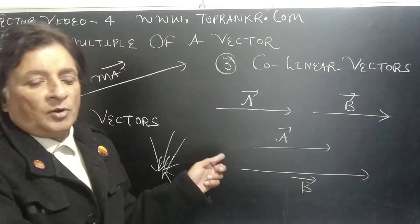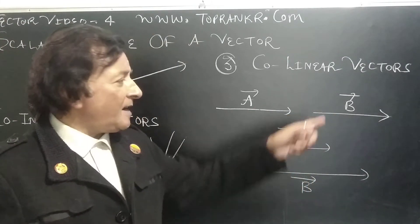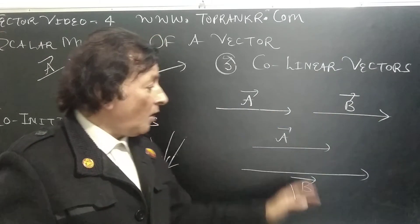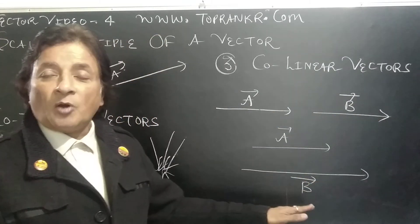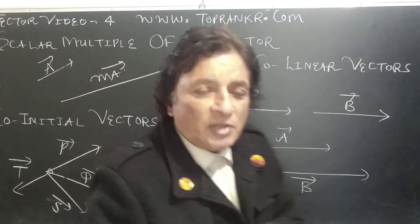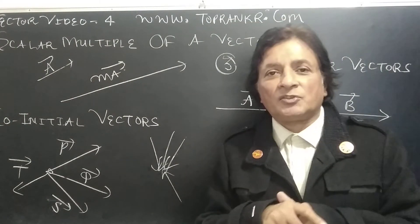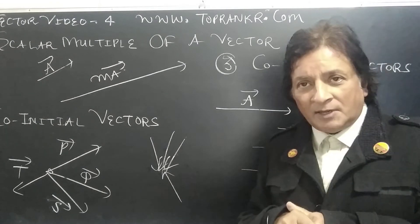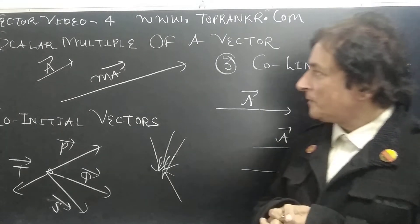For example, vector a and b are along the same line or along two parallel lines, they are called co-linear vectors. These are the simple basic definitions of vectors which I have explained here in video lecture number four.